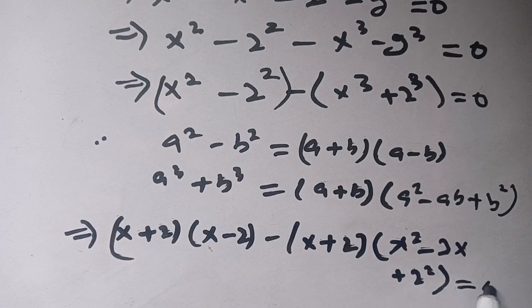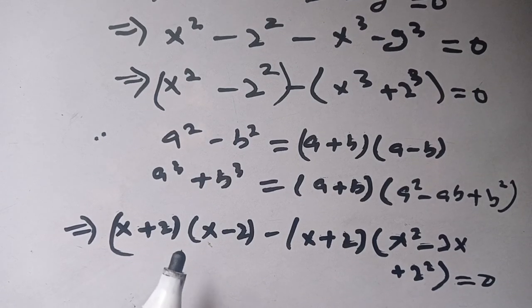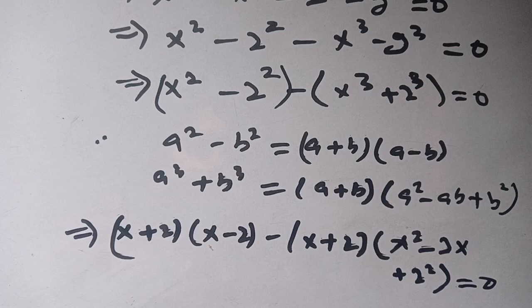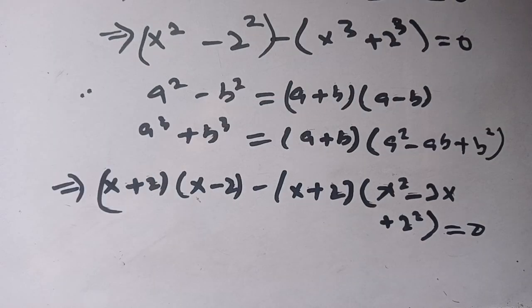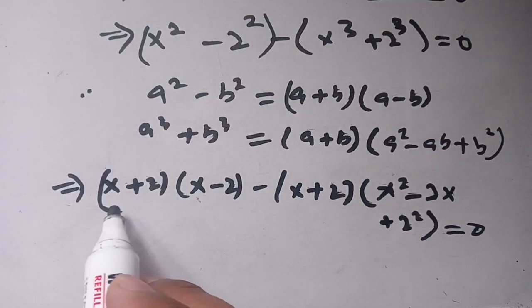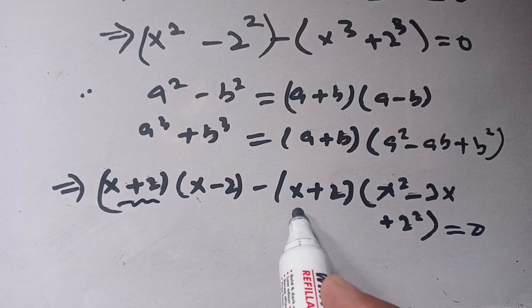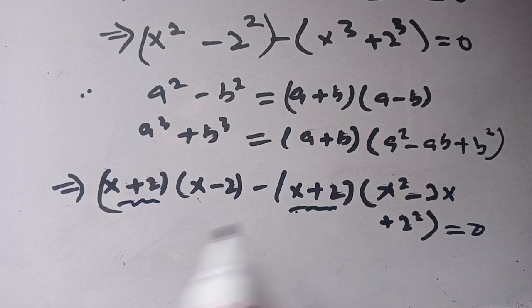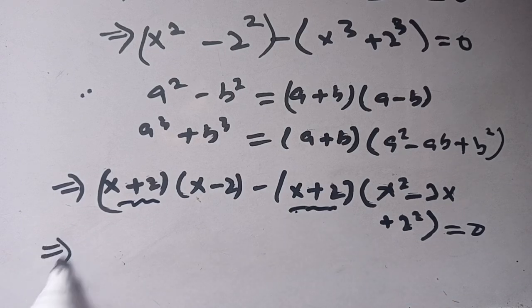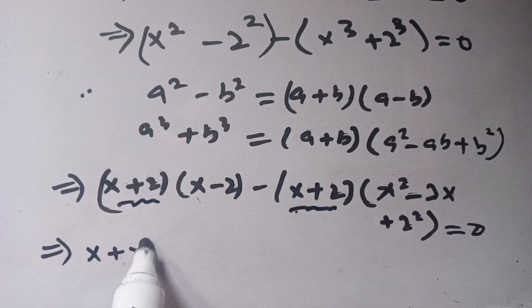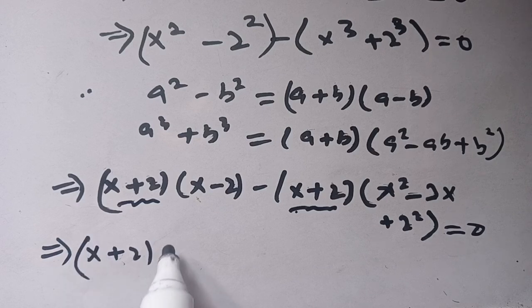We can take out (x plus 2) as a common factor from both terms, giving us (x plus 2) times the remaining expression is equal to 0.